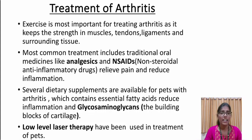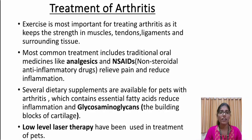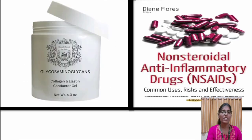To treat arthritis, exercise is most important as it keeps strength in muscles, tendons, and surrounding tissues. The most common treatments include traditional oral medicines like analgesics and nonsteroidal anti-inflammatory drugs, which relieve pain and reduce inflammation. Several dietary supplements are also available for pets with arthritis, including glycosaminoglycans, which are the building blocks of cartilage. Low-level laser therapy has also been used in the treatment of pets. You can see the images of treatments like glycosaminoglycans and nonsteroidal anti-inflammatory drugs.